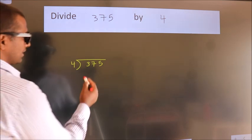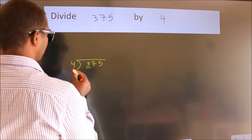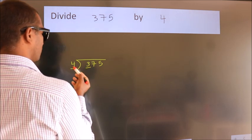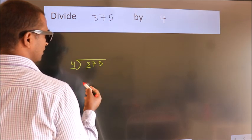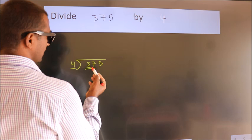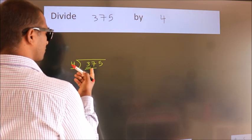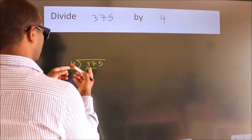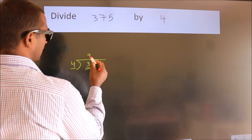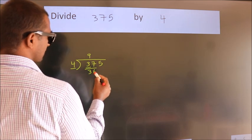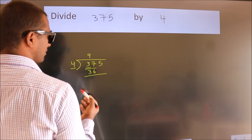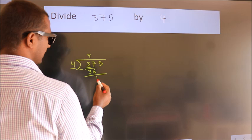Next, here we have 3. Here 4. 3 is smaller than 4, so we should take 2 numbers: 37. A number close to 37 in the 4 table is 4 times 9 equals 36. Now we should subtract. We get 1.